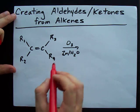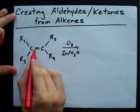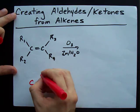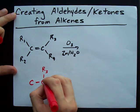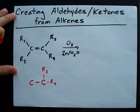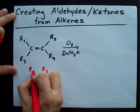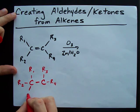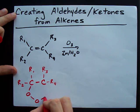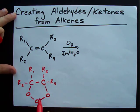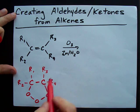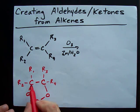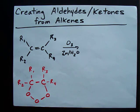What ends up happening is ozone adds itself across the double bond. That double bond becomes a single bond. You still have R3 and R4 on that carbon, and R1 and R2 on this carbon. You have your ozone, O3 — that's three oxygens — and you get this pentagon that actually has three oxygens in it.